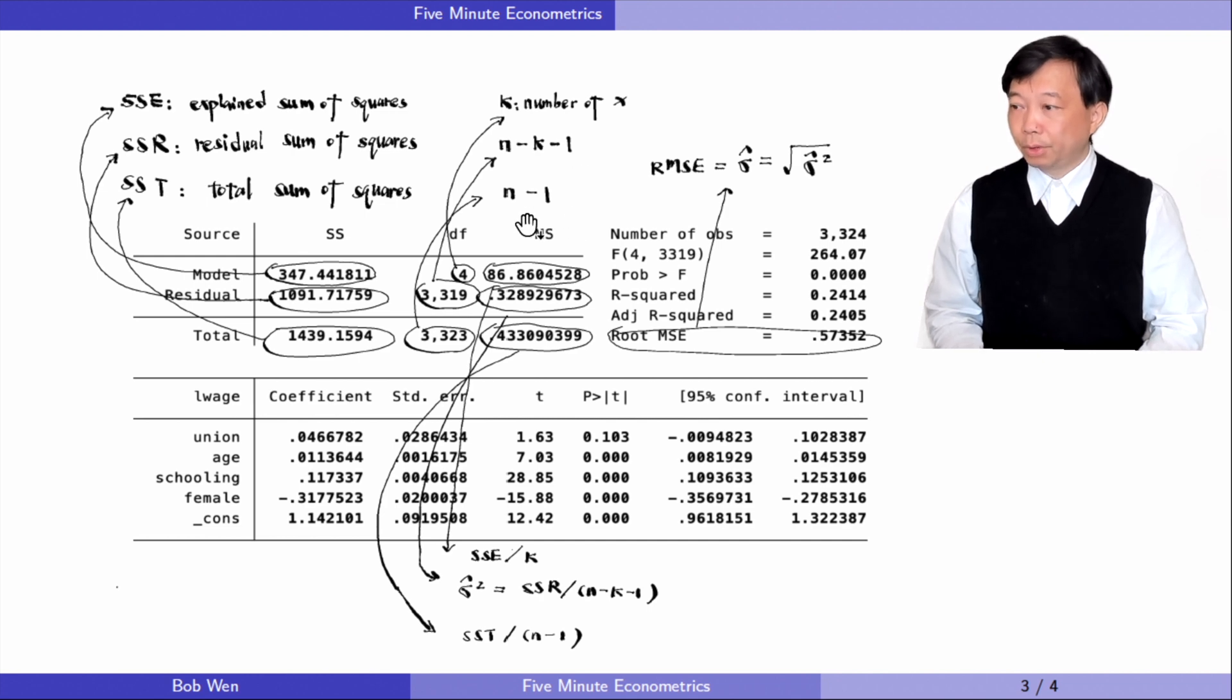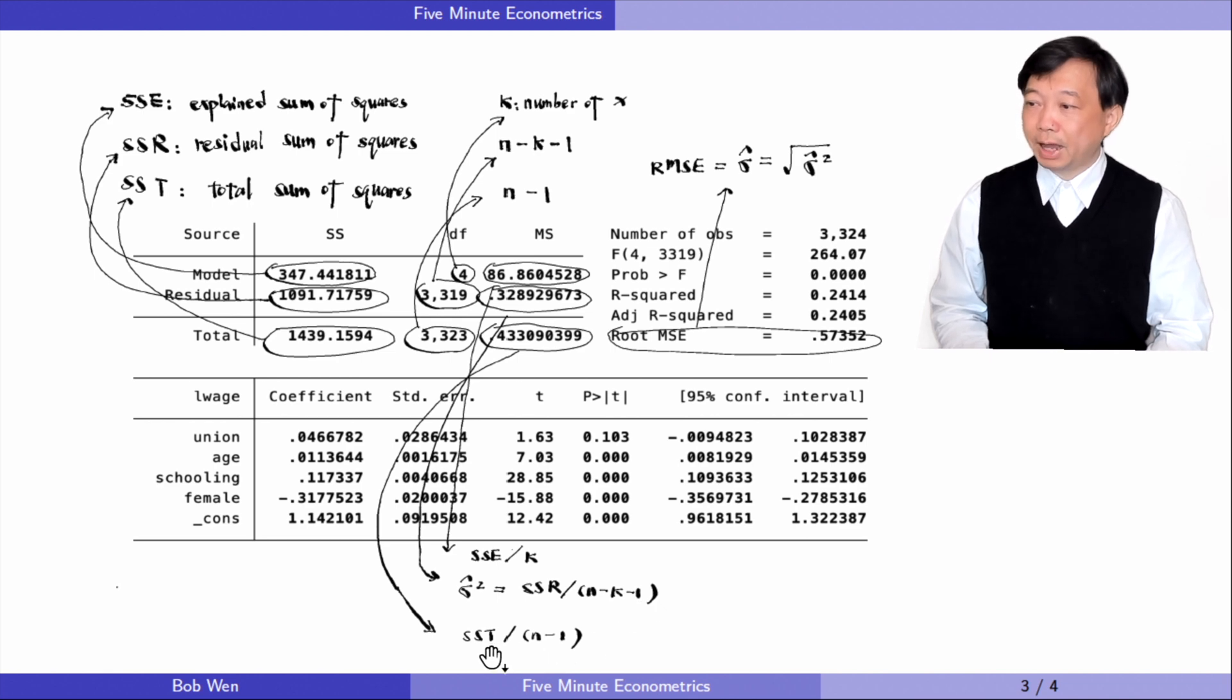The next column is the ratios of the previous two columns. The number in the middle is the unbiased estimator of the error variance, the sigma squared hat. The root mean squared error, RMSE, is sigma hat. It equals the square root of the sigma squared hat.